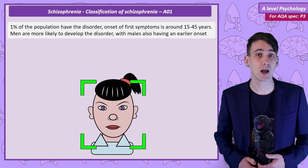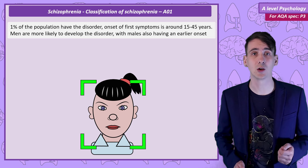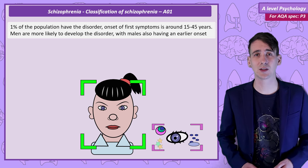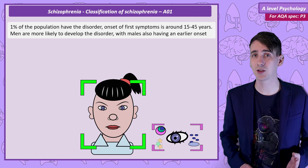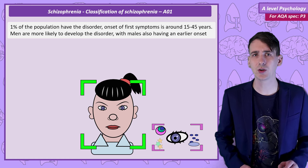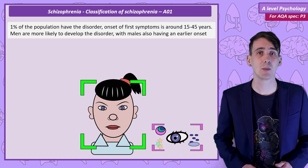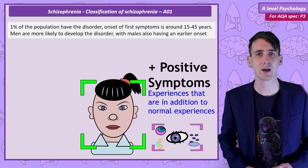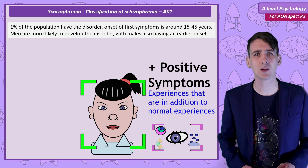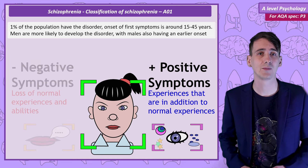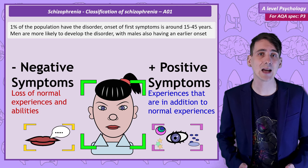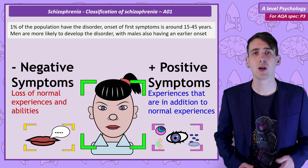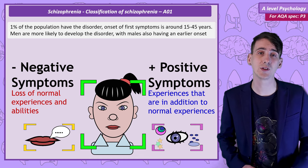That describes well its two positive symptoms, which are hallucinations and delusions. When describing the symptoms of schizophrenia, they're either positive or negative — it's important not to be confused by those terms. Positive means experiences that are in addition to normal experience, so what people with schizophrenia experience that non-sufferers don't. Negative symptoms are a lack of normal experiences or abilities, so what people with schizophrenia don't experience that non-sufferers do.